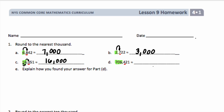For D, we have 706,421. I'm going to unbundle the 100,000 all into the thousands. So we have 706 thousands. This is between 706,000 and 707,000. This is less than 706,500, so I would round down to 706,000.